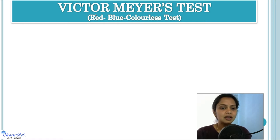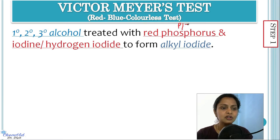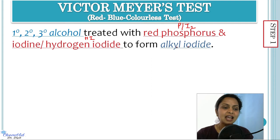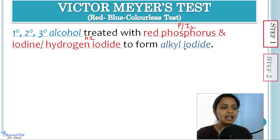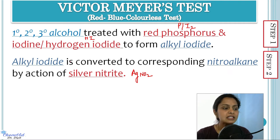In Step 1, the primary, secondary, or tertiary alcohol is treated with red phosphorus and iodine — or alternatively with hydrogen iodide (HI) — to produce alkyl iodide. In Step 2, the alkyl iodide reacts with silver nitrite (AgNO₂) to form nitroalkane.